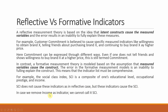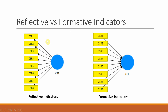Social class index does not cause its indicators — as in the reflective case — rather, these indicators cause or form the social class index. Social class index is made up of these indicators, so if we remove income as an indicator we cannot call it SCI anymore. In SmartPLS, when arrows flow from CSR to the indicators it is reflective; when arrows flow from the indicators to the latent construct CSR, it is formative.